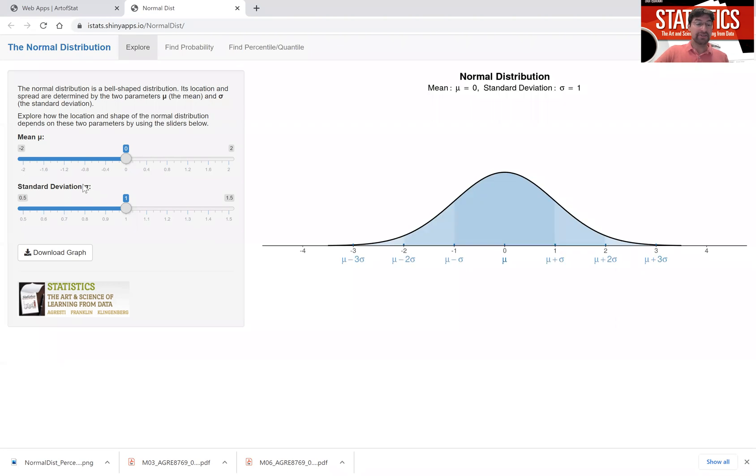The standard deviation sigma describes how peaked the distribution is or how spread out values are. If I make the standard deviation smaller you'll see the distribution will become more peaked, meaning its range of values is smaller. When I make the standard deviation larger it's spread out over a larger range of values as you see in this demonstration.